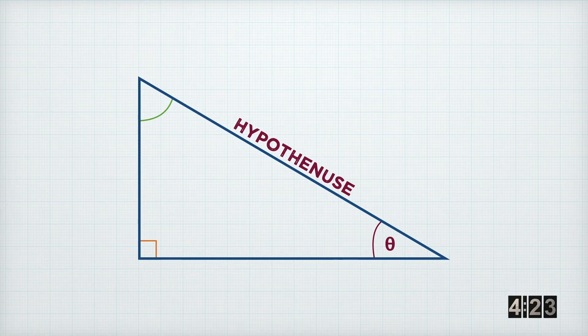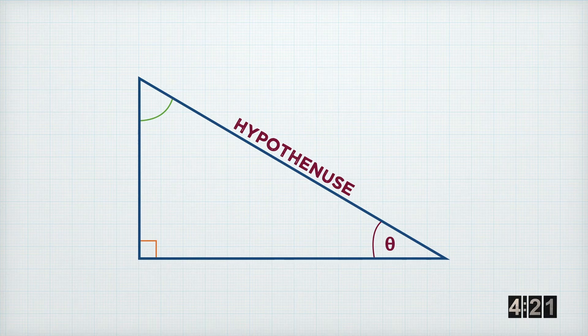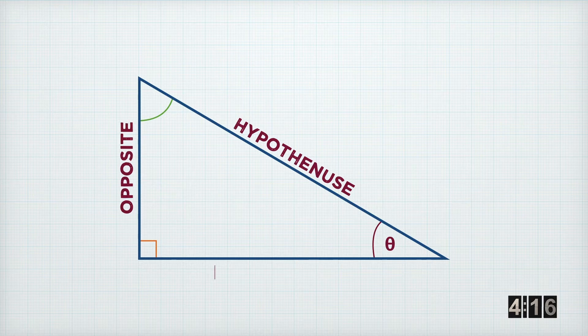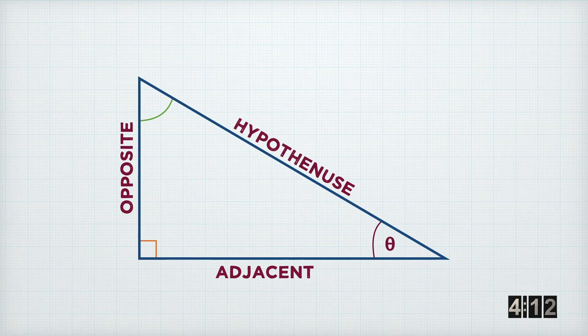Depending on which angle you choose within the triangle, one of the sides is labeled the opposite, and one of the sides is labeled the adjacent side. Now, the opposite side is opposite the angle, and the adjacent side is the one that's adjacent to the angle that we're interested in.